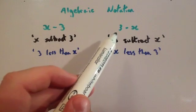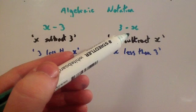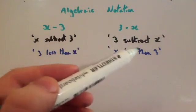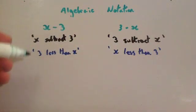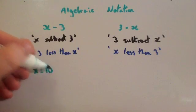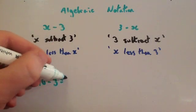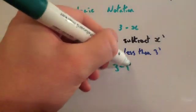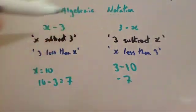This time I've written 3 subtract x. 3 subtract x would mean x less than 3, because you're subtracting the x from the 3. These two things are very different to each other. If x equals 10, this one would be 10 take away 3, which equals 7. But this one would be 3 take away 10, which would be equal to minus 7. So these two things would be very different.